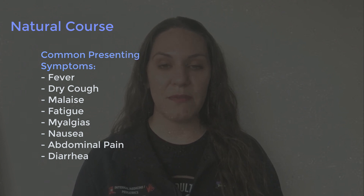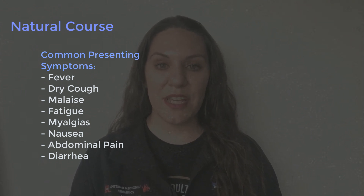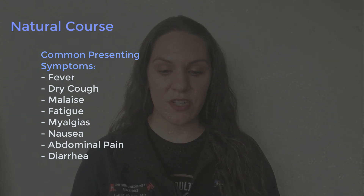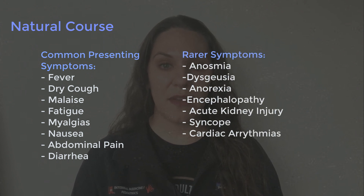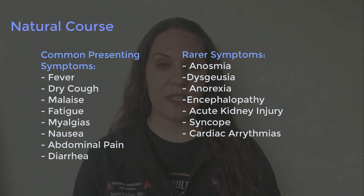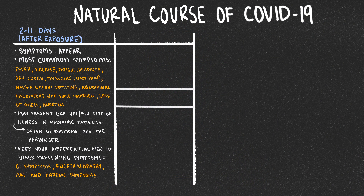These are very flu-like symptoms, but you can also have GI symptoms — nausea, abdominal pain, and diarrhea have definitely been noted in COVID-19 patients. Some patients have reported anosmia, or lack of smell, as well as anorexia. Keep your differential open, because some patients have presented with encephalopathy, acute kidney injury, and cardiac symptoms — everything from PEA to new onset AFib to myo- and pericarditis. In pediatric patients, think URI presentations: failure to thrive, nausea, and diarrhea. Really keep your differential very open for COVID-19.